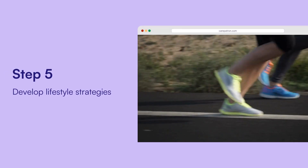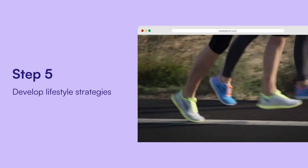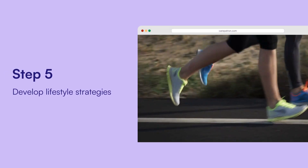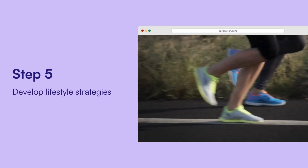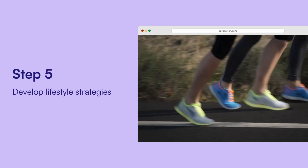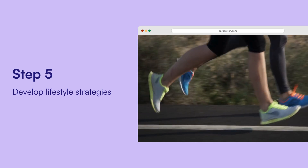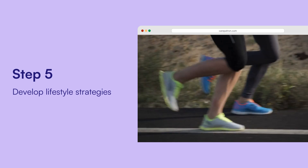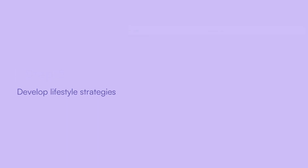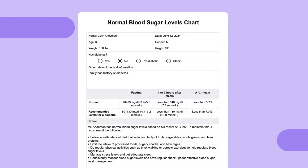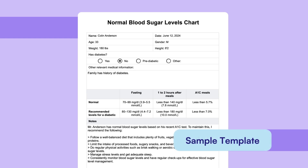Develop lifestyle strategies for blood sugar management. This might include increasing physical activity, adjusting their diet, using medication, or monitoring their glucose levels through regular testing. If you'd like to see a sample of our normal blood sugar levels chart template, check out the example we've provided.